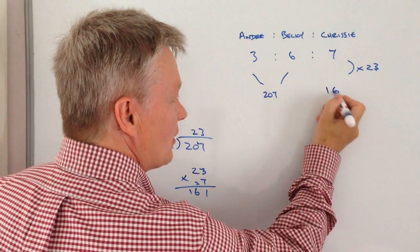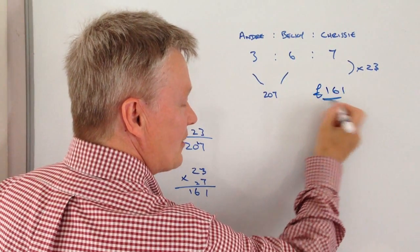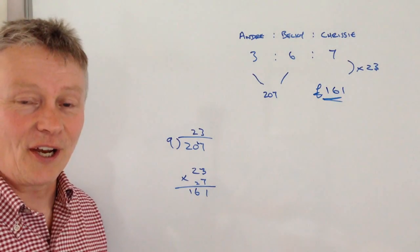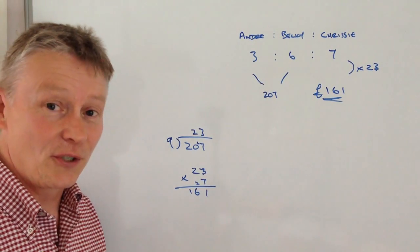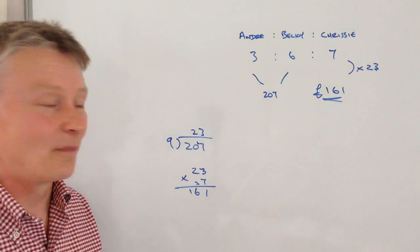So it's quite a lot of money that's been shared out, but the answer to the question is that Chrissy will get £161. Andre and Becky will get £207 between the two of them.